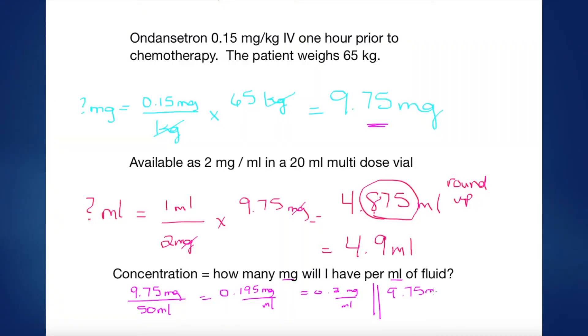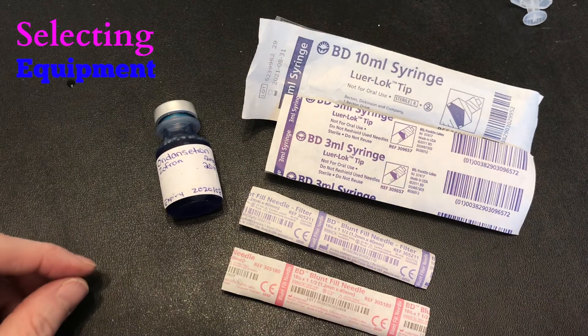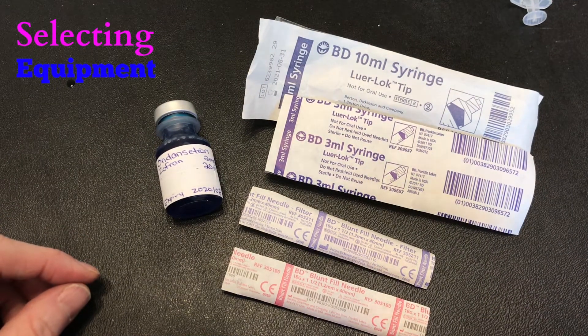Say you didn't have a 50 ml bag available, you only had a 100 ml. Quickly calculate that dosage out as well to make sure you're within the safe range and you find that you have 0.097 milligrams per ml. So now we're ready to select our tools to draw up our medication.